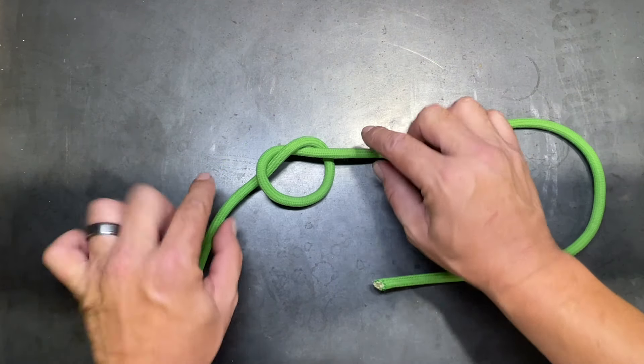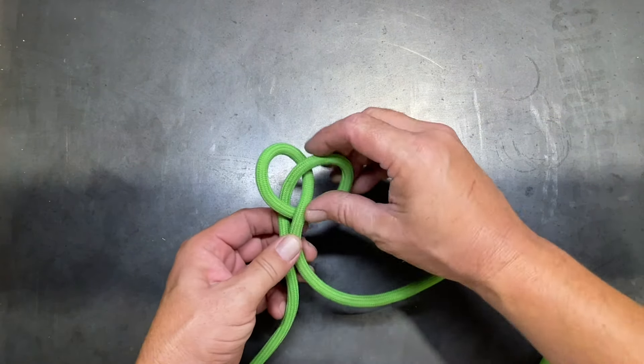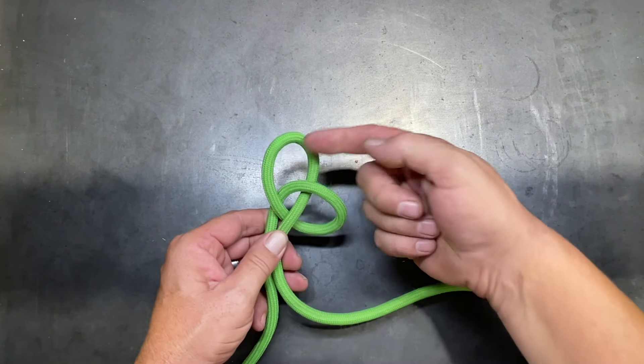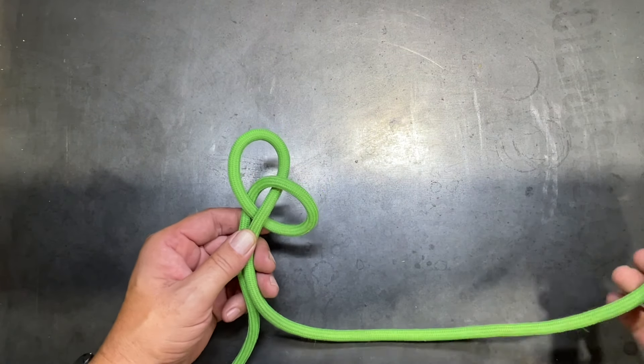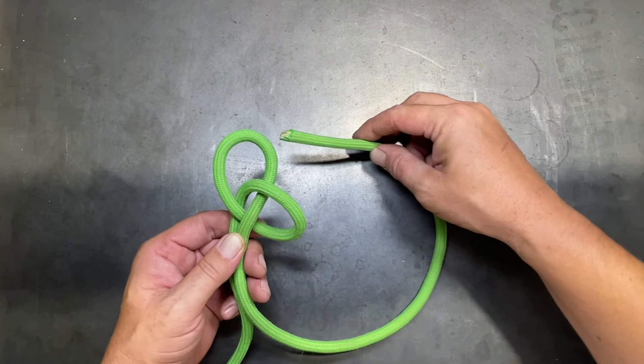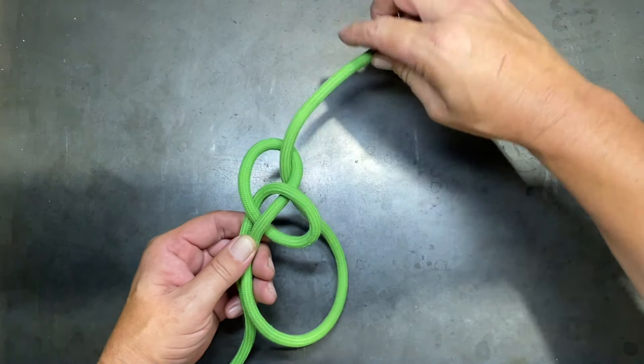And then what we're going to do is we're going to turn a loose overhand knot into the rope. Now we'll take that overhand and our standing end and our working end, and we're going to pull them together while opening up those loops to form an upper and a lower loop.